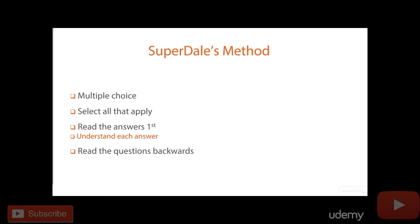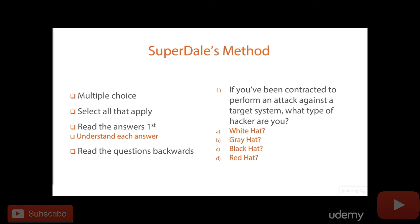I read the question's last sentence first. Let me show you an example. I'm not going to look at the question first — I'm going to look at the answers. The answers are: white hat, gray hat, black hat, and red hat. In my mind I think: white hat is a good hacker, black hat is a bad hacker, gray hat is someone who depends on the day or who's paying them. Red hat — never heard of a red hat. Many times one of the answers will be completely wrong, and in this case there is no such thing as a red hat, so I can immediately cross red hat off.